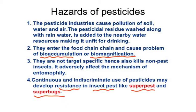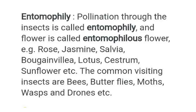Entomophily is pollination through insects, and a flower pollinated this way is called an entomophilous flower. Examples include rose, jasmine, bougainvillea, lotus, and sunflower. The common visiting insects are bees, butterflies, moths, wasps, and drones. When pesticides kill these insects, they disrupt the pollination mechanism of these flowers, which is why it adversely affects entomophily.